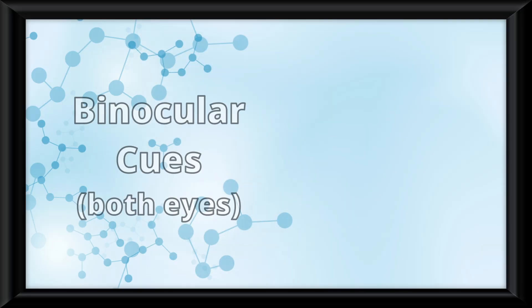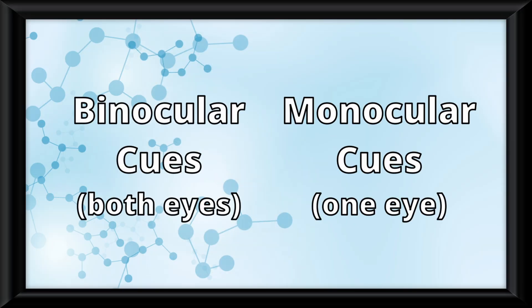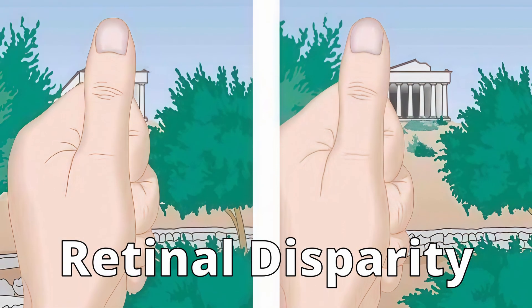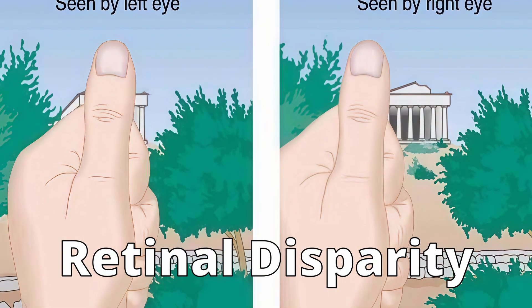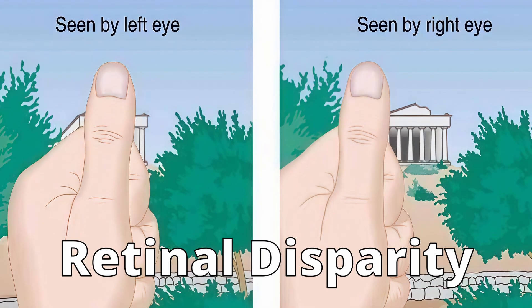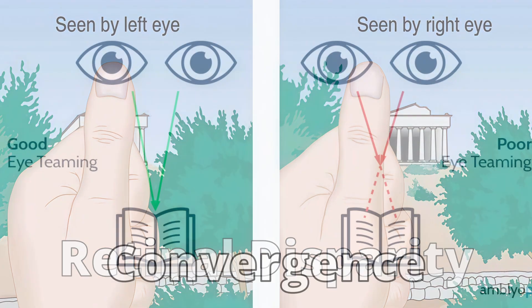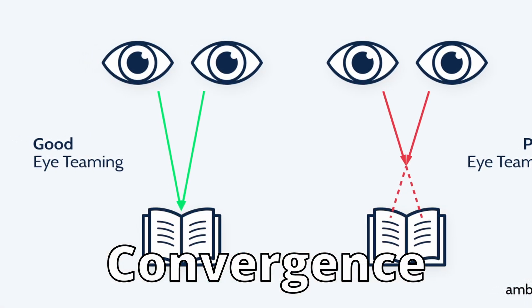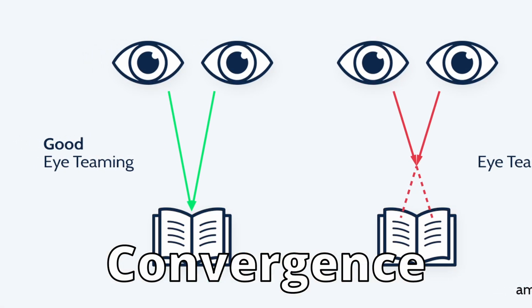Now let's speed run through all the binocular and monocular cues. Retinal disparity is the difference between the images seen by the left and right eyes. Convergence is where your eyes will turn inward, or converge, on one object.